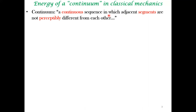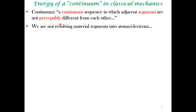In a continuum, adjacent segments may have some variable that changes — pressure, temperature distribution — but these changes are continuous and not perceptibly different from each other. We are not resolving matter into electrons or atoms. Before microscopes were discovered, everything looked like a continuum. Even a solid, where atoms are arranged in a discrete manner, behaves like a continuum at the macroscopic level.